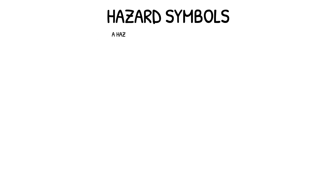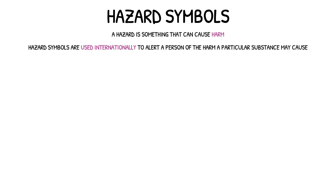A hazard is something that can cause harm. Hazard symbols are used internationally to alert a person of the harm a particular substance may cause and to indicate the precautions that need to be taken when handling them. Some of the main hazard symbols you are expected to recognise at GCSE level are as follows.